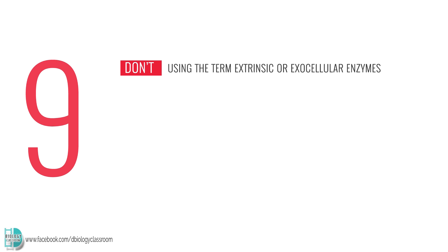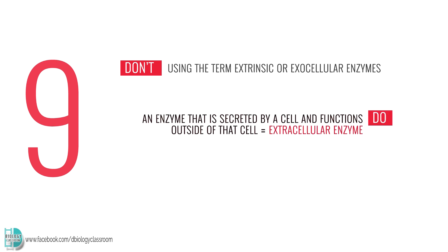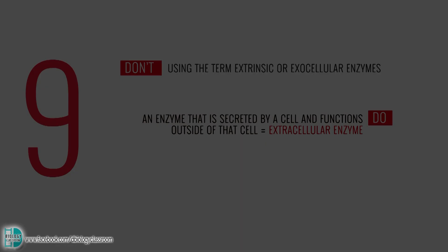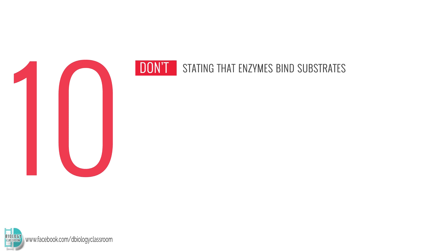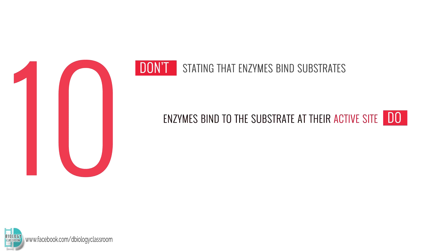Number 9: using the term extrinsic or extracellular enzymes incorrectly. An enzyme that is secreted by a cell and functions outside of that cell is called an extracellular enzyme. Number 10: stating that enzymes bind substrates. Enzymes only bind to the substrate at their active sites, so you must use that term when you want to describe their actions.